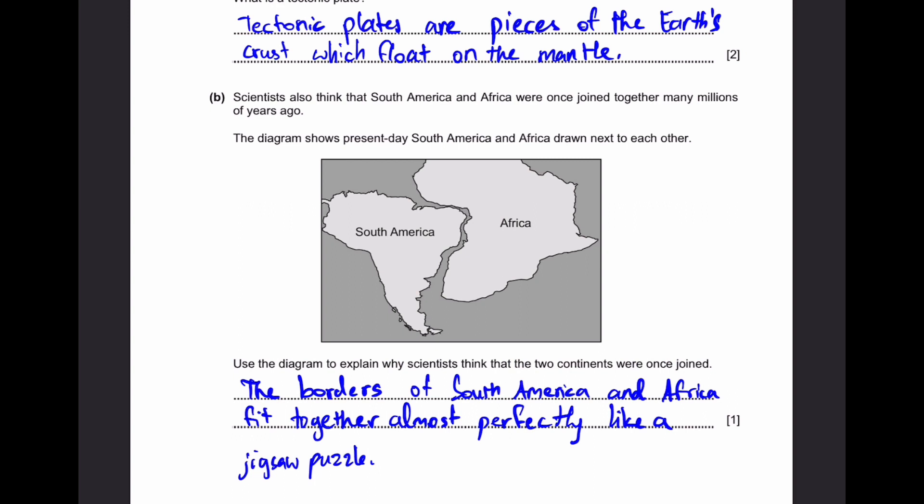Part B: Scientists also think that South America and Africa were once joined together many millions of years ago. The diagram shows present-day South America and Africa joined next to each other. We can see that their borders are a very close fit to each other. It's almost a perfect fit. Use the diagram to explain why scientists think that these two continents were once joined. Well, it's kind of simple. The borders of South America and Africa fit together almost perfectly. I've added like a jigsaw puzzle because it gives more description and a clearer image, but it's not really required.